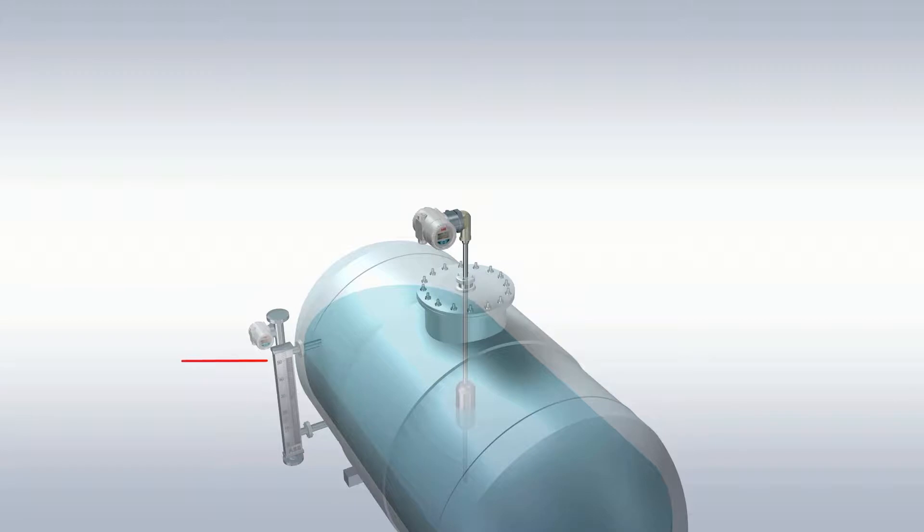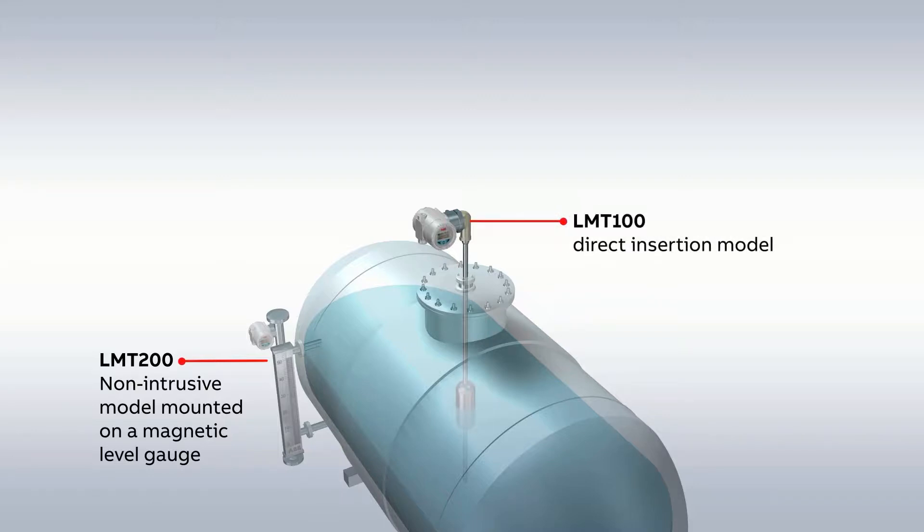The LMT200 is a non-intrusive model mounted on a magnetic level gauge. The LMT100 is a direct insertion model.